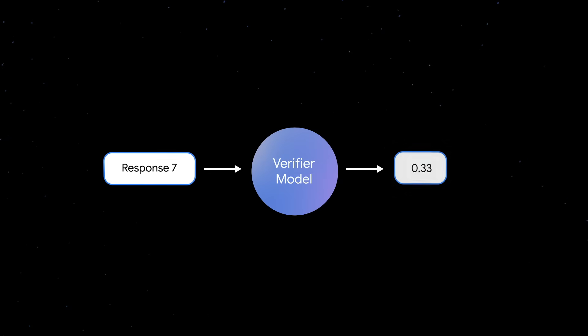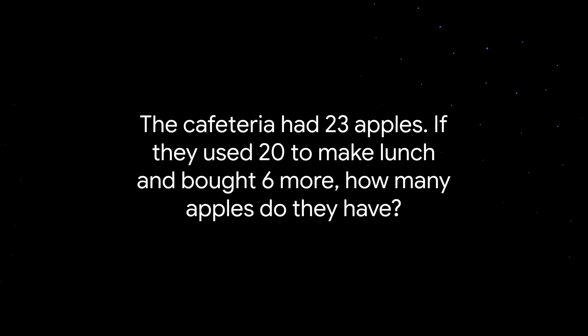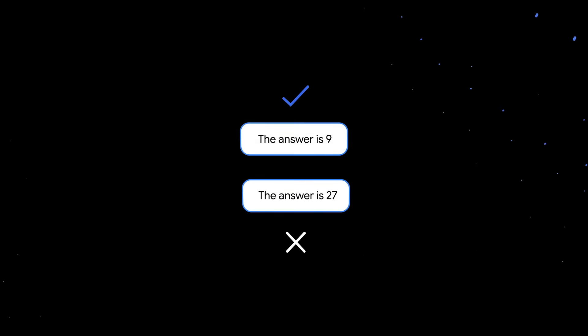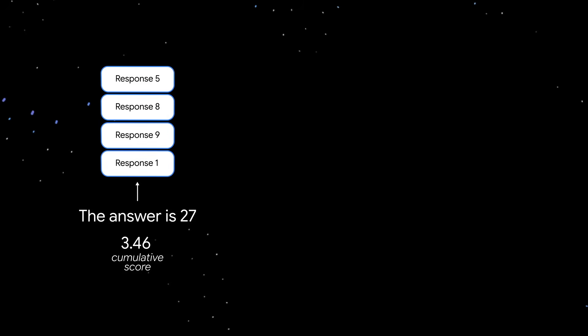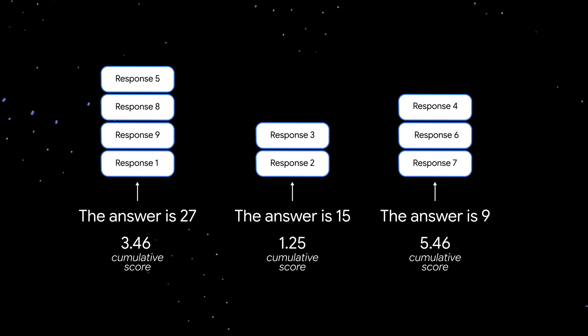Learned reward models are a type of model used to evaluate and improve the performance of other AI models, often against specific criteria like correctness, fluency, or relevance. To see this in action, let's return to the math problem from the chain of thought paper. A well-calibrated reward model would return a high score for the answer is 9 and a low score for the answer is 27. You might have the reward model provide a score for each of the 100 candidate answers and then return the answer with the highest score. Alternatively, after scoring each of the answers, you could group answers that are the same into buckets and return an answer from the bucket with the highest cumulative score.